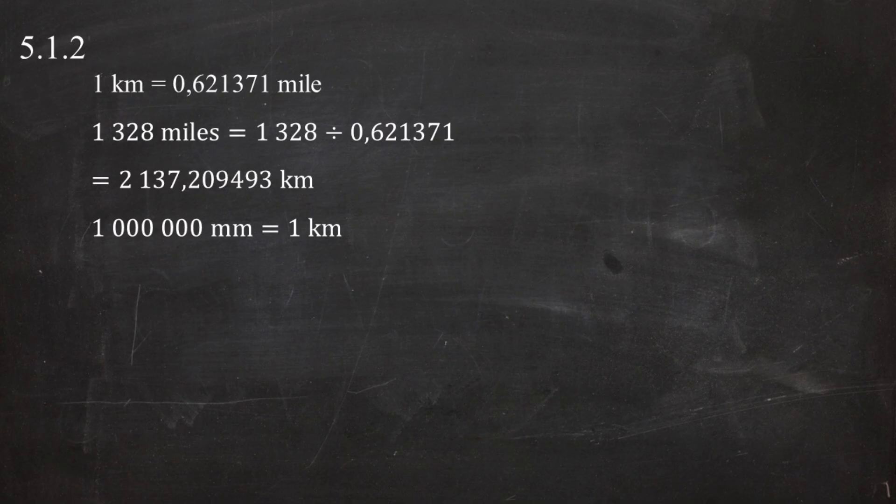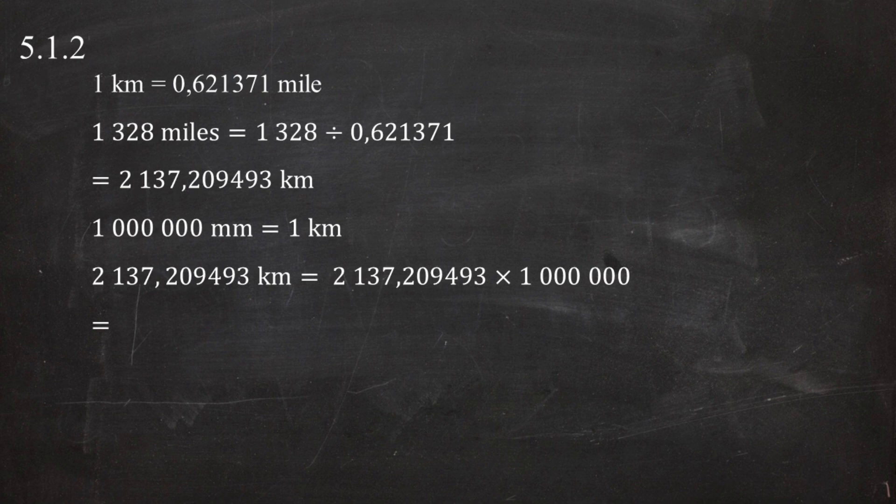To convert the distance from Johannesburg to Antananarivo from kilometers to millimeters, we use the conversion factor of 1,000,000 millimeters equal 1 kilometer. So, 2,137.209493 kilometers multiplied by 1,000,000 millimeters per kilometer gives us a distance of 2,137,209,493 millimeters.